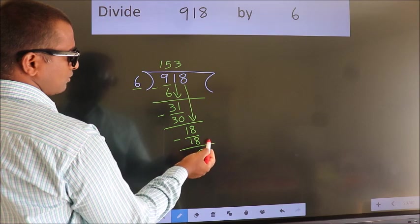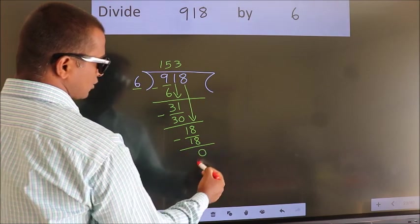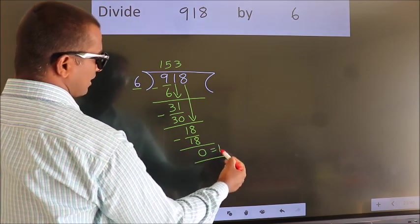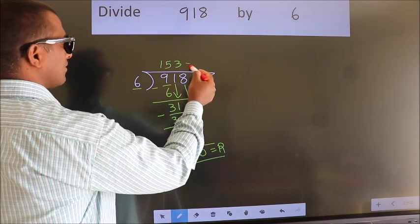No more numbers to bring it down. So we stop here. This is our remainder. This is our quotient.